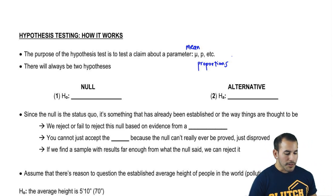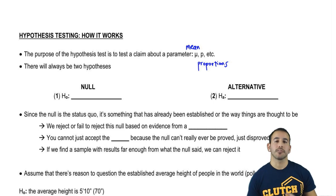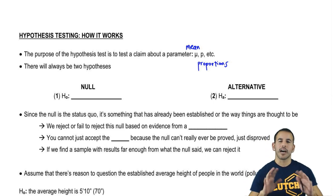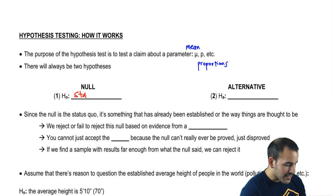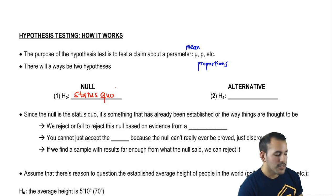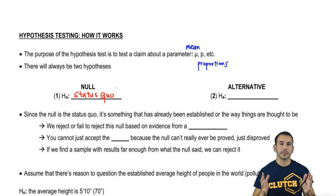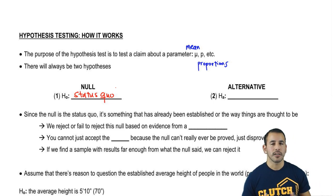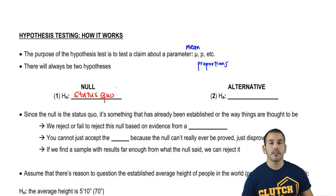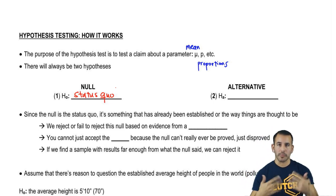There are always going to be two hypotheses. We have our null hypothesis, which is essentially the status quo — what people generally think is supposed to be happening. The null hypothesis is either that something is equal to what we thought it was before, equal to whatever we claimed it to be initially, or that nothing really special is happening.